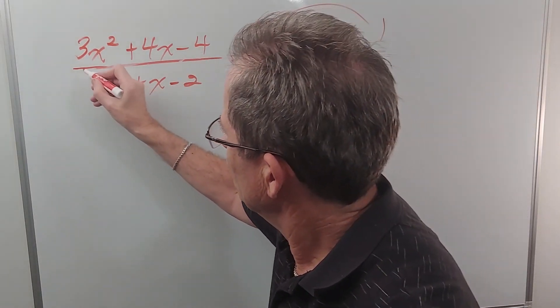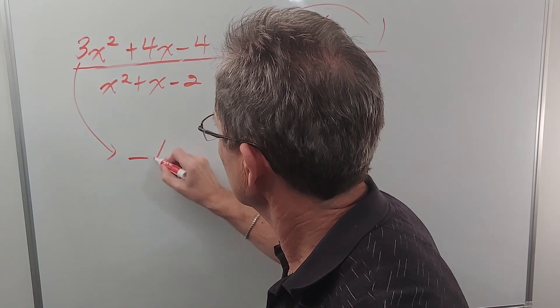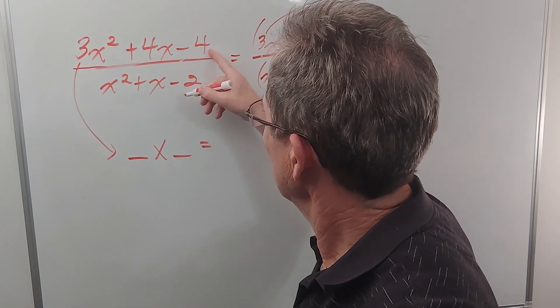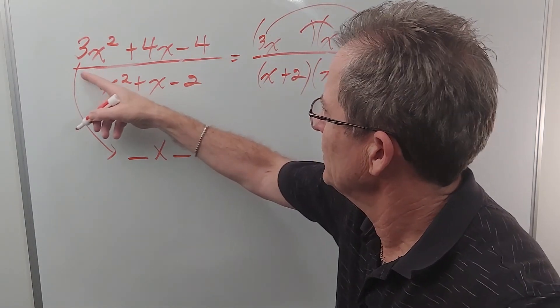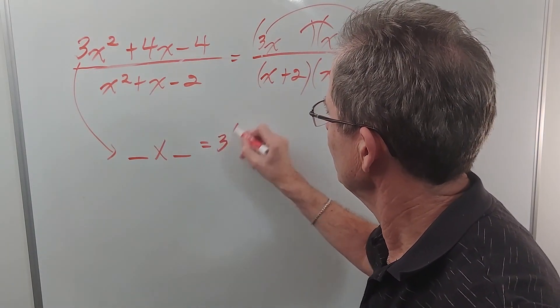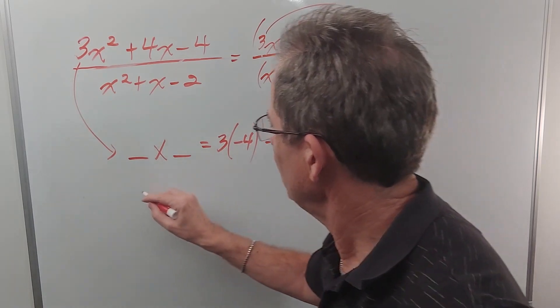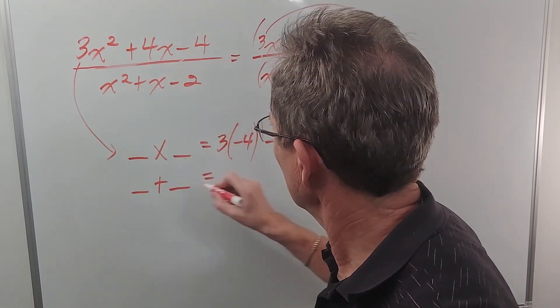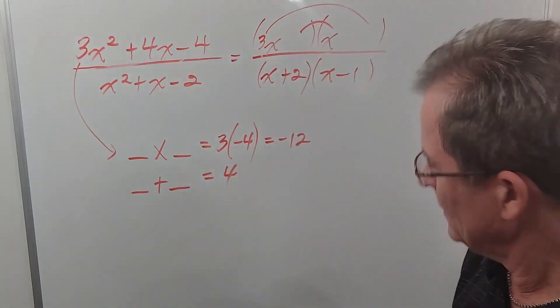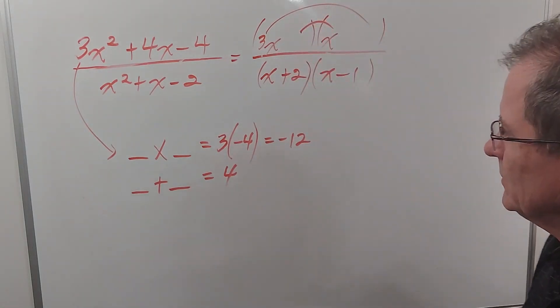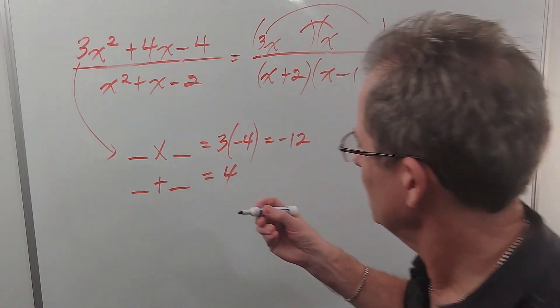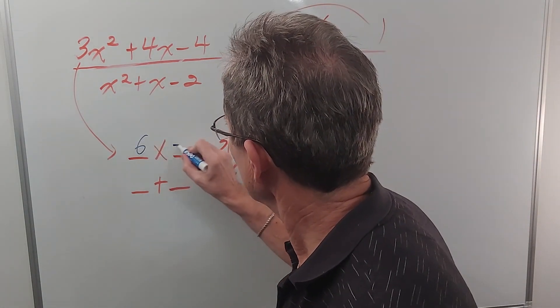So by that method we have to find two numbers that don't multiply to negative 4. They have to multiply to 3 times negative 4 which is negative 12 and they have to add up to that same number 4. So if you take a moment think about it the two numbers are 6 and negative 2.